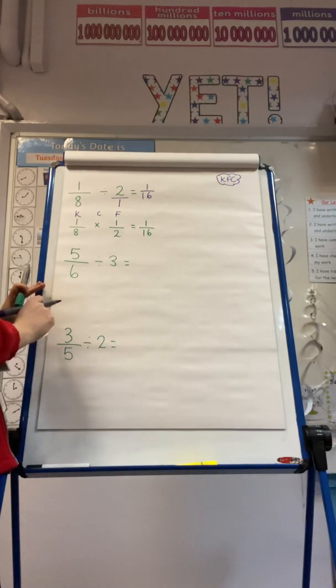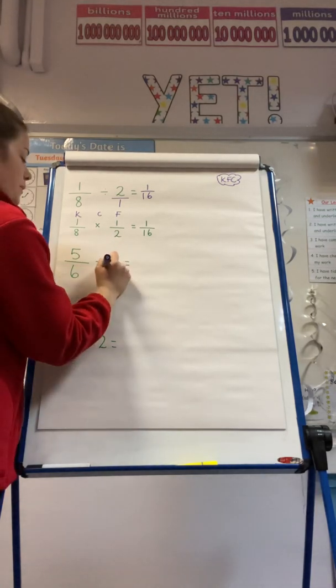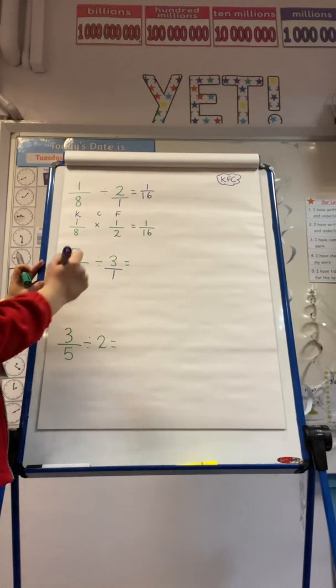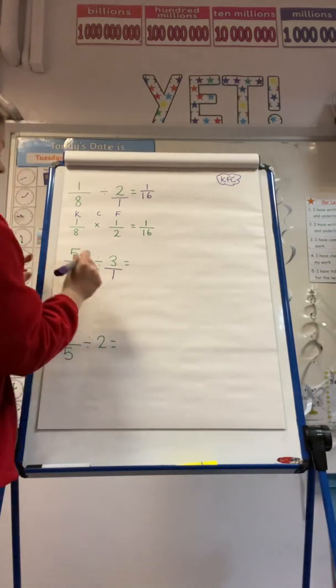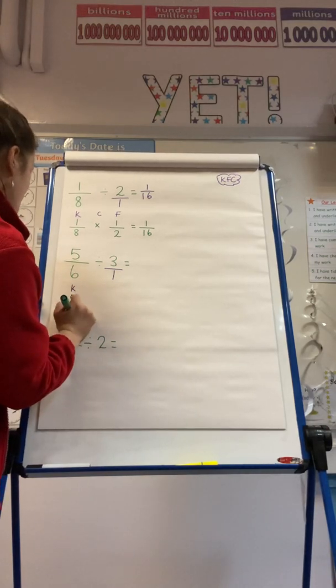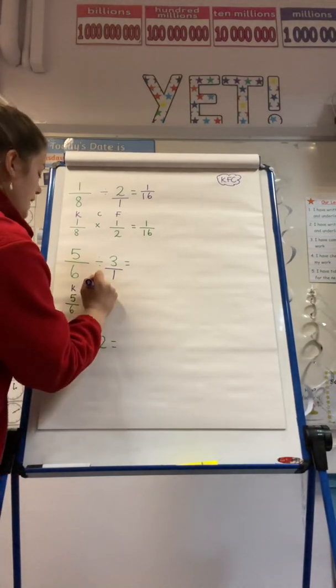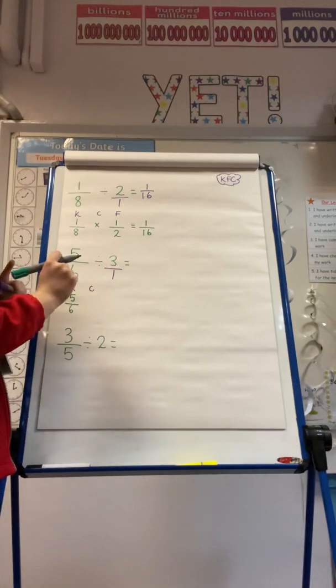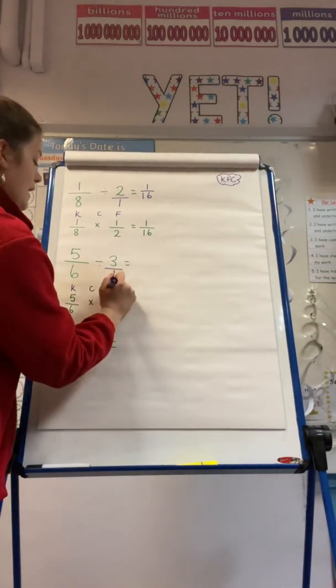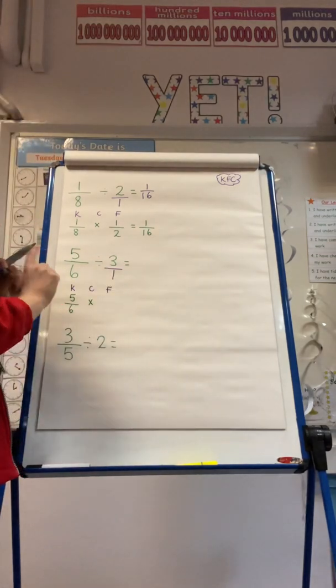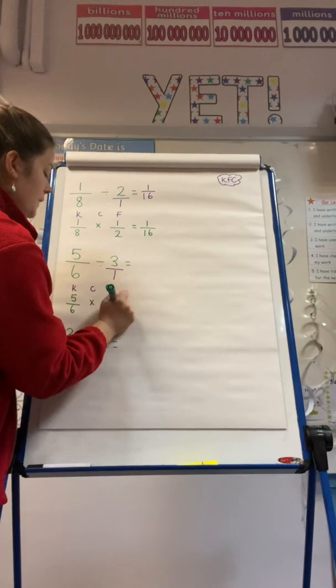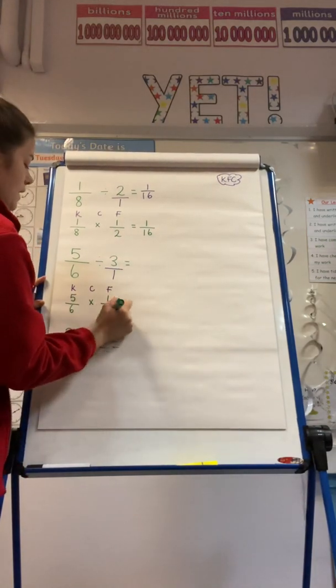Now I'm going to look at 5 sixths divided by 3. So I'm going to turn my integer, which is 3, into a fraction. And the first thing I'm going to do is keep. So my original fraction is 5 sixths. I change the operation. Remember, we're using the inverse, so we're looking at multiplication. And I flip that final fraction. So my denominator becomes my numerator, and my numerator becomes my denominator.